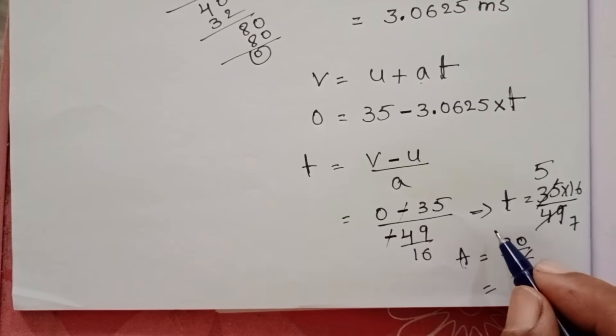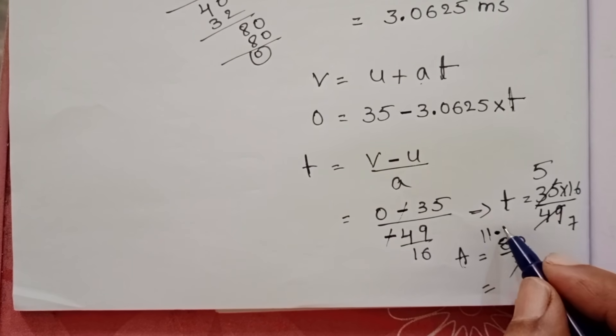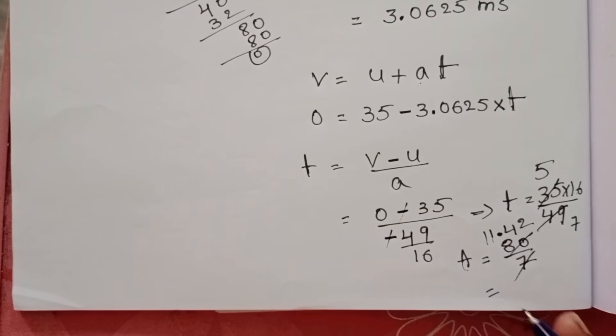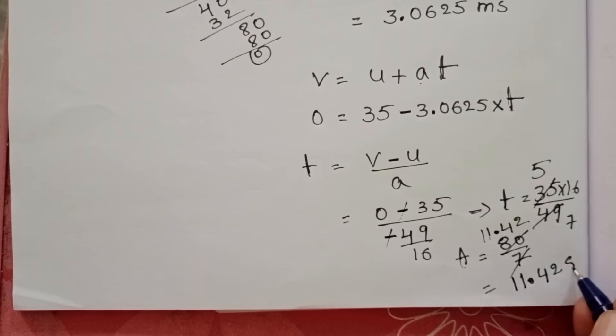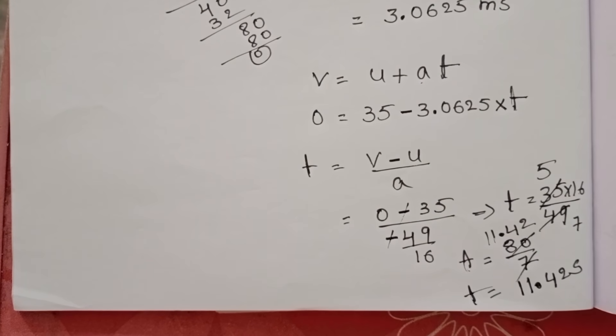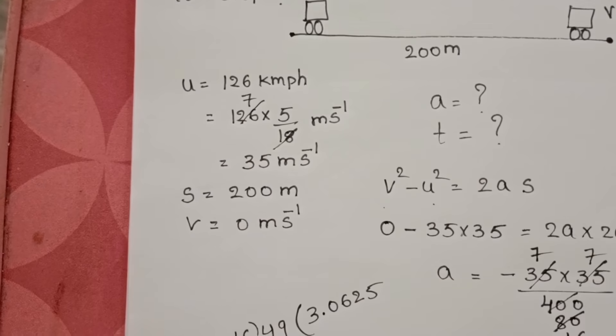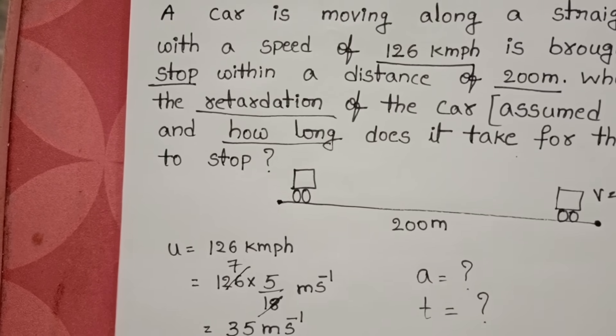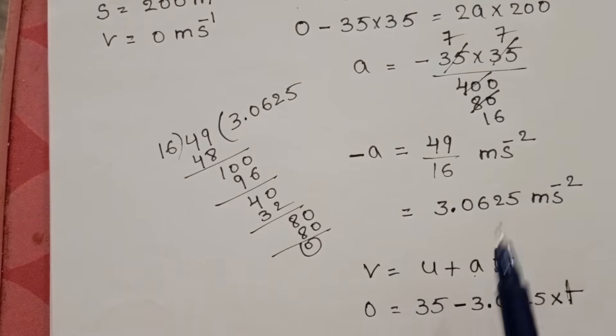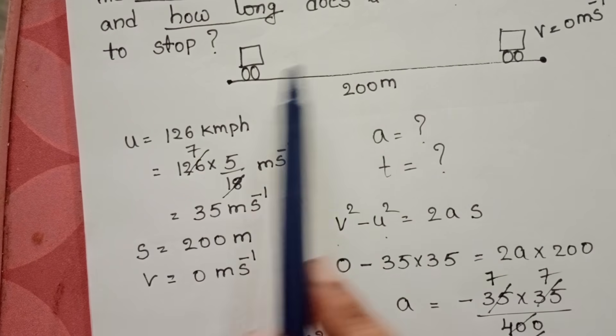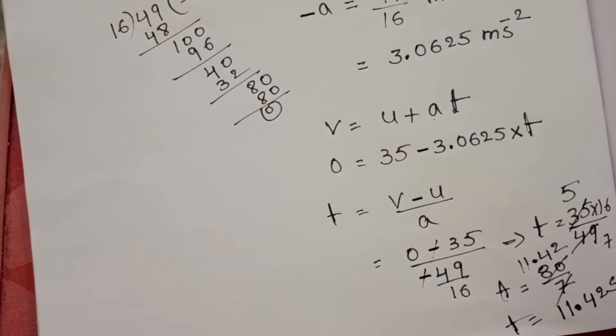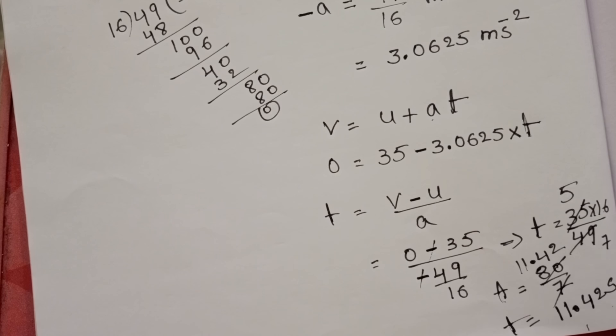Now cancel with 7: 7 elevens, take 0, 7 fours and 7 twos. Time equals 11.42 seconds. First question, retardation: retardation is 3.0625 meter per second squared. And second question, how long does it take for the car to stop? 11.42 seconds.